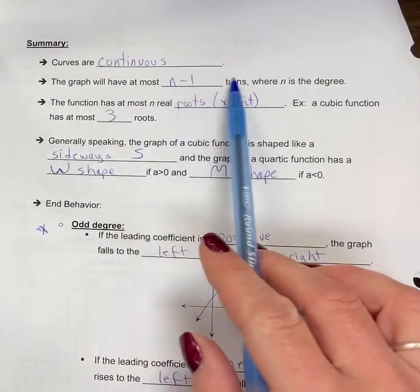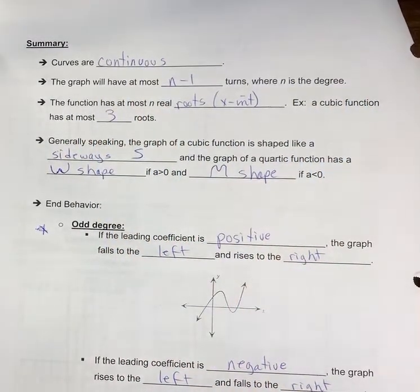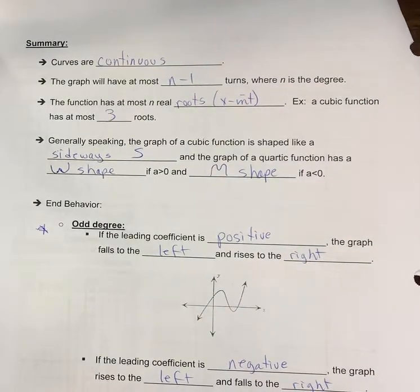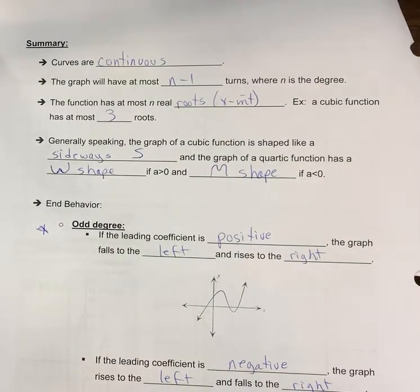The graph will have at most n minus 1 turns, where n is the degree. If it's cubic, then it could change directions twice, so we say two turns.